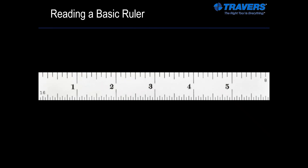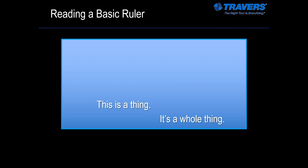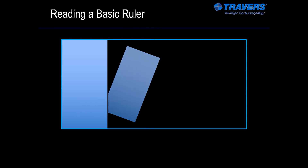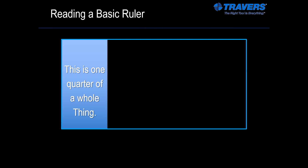Here we have a basic 6-inch ruler. So let's see what all the lines are all about. Let's first take this thing and just call it a whole thing. So let's take that thing, split it in half, take one piece apart. Now we have a half of that whole thing. Let's do it again — split that down the middle, remove that section. Now we have one quarter of a whole thing.